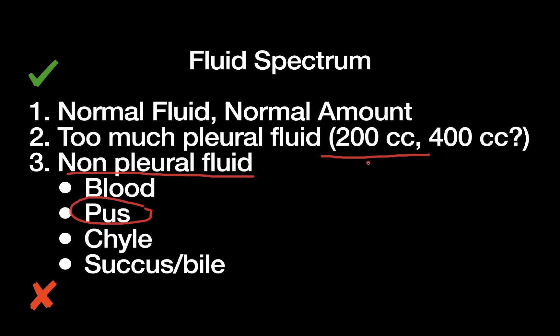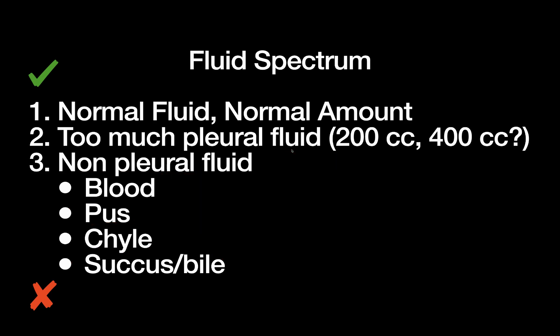If you're rounding and you now see succus, bile, or some sort of non-pleural fluid in your chest tube when you used to have pleural fluid, that's a big deal and something your team definitely needs to know about — it might require a change in management.